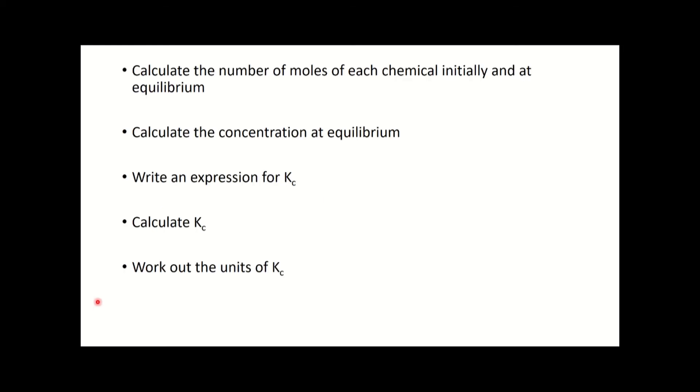Our answer should be 0.812 decimeters six moles to the minus two. In terms of how we approach this question, we're always doing the same thing: calculate the number of moles initially from the data, calculate the concentration at equilibrium from the equation by working out how much has been used and how much is left, write an expression for Kc, calculate Kc by plugging in numbers, then work out the units. That's a nice six marks. If you're well drilled in this, you should be able to pick them up each time. Practice is the key.